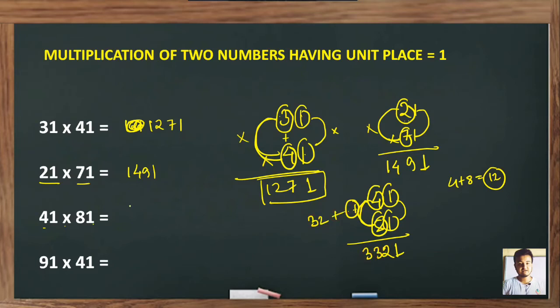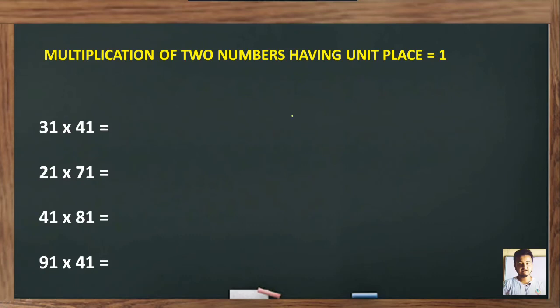Similarly for 91 into 41. See, 1 into 1 is 1. Then 9 plus 4 is 13. Write 3 here and 1 will be your carry. Then 9 into 4 is 36 plus this carry 1, which will be 37. So the answer is 3731.